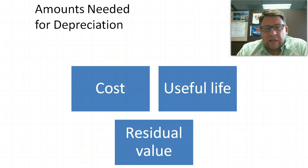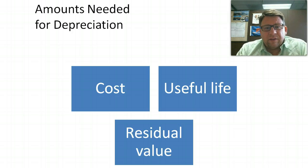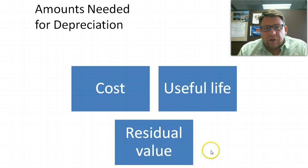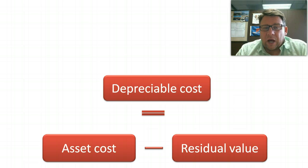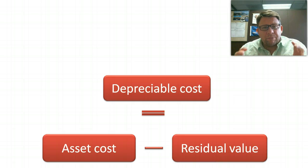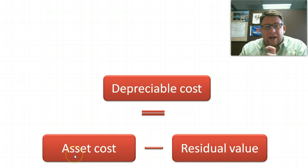There are three pieces of information we need in order to calculate depreciation. We need to know the cost of the asset — the prior podcast showed how to arrive at that. Then we need to estimate the useful life of the asset, and we also estimate the residual value, sometimes called the salvage value, which is what we think the asset will be worth once we're done using it. There's also a term called depreciable cost, sometimes called depreciable base — it's the cost of the asset minus the residual or salvage value, representing the amount we're going to depreciate.